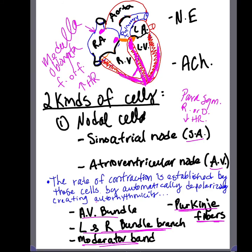The chemicals involved in autonomic control of heart rate are norepinephrine and acetylcholine. Norepinephrine is part of the sympathetic division and causes an increase in heart rate and an increase in the force of contractions. Acetylcholine comes from the parasympathetic system and causes a decrease in heart rate and a decrease in the force of contraction. And that's it for today.